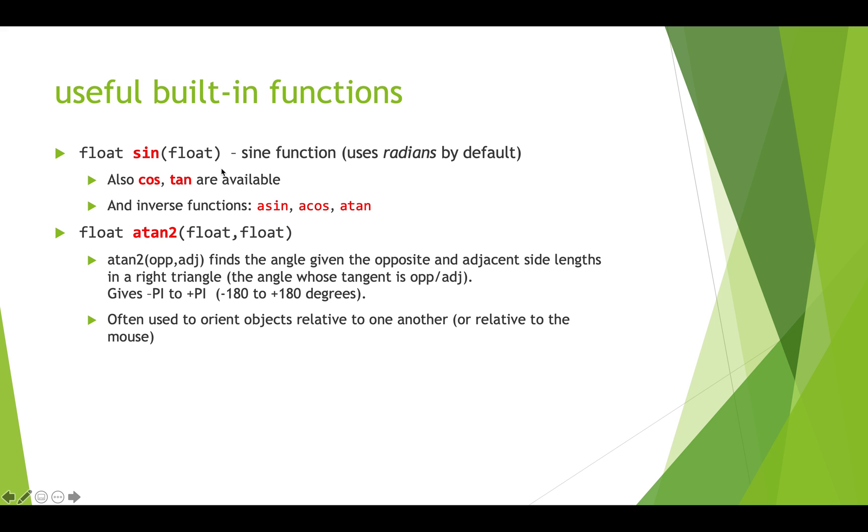If we need to do trigonometry, if we need to figure out the size of the adjacent side of a triangle, we need those trigonometric functions. These are built into processing - we can pass in the angle as a float and pass that into sine and it will give us the result. We have to remember that by default this expects a radian. If we have a number in degrees, we have to use the radians function to convert it to radians before we pass it in. There are also the inverse functions: asin, acos, atan.